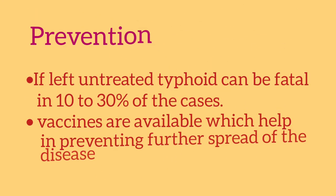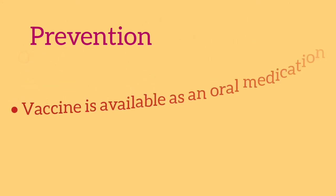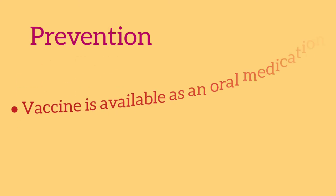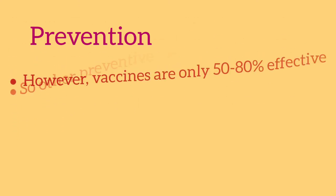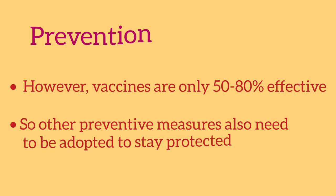There are two vaccines for preventing the disease. Vaccines are available as oral medication and injection. The oral medication can be taken by children and adults over 6 years of age, and the injection over 2 years of age. Vaccines may provide some protection against typhoid fever; however, they don't last forever, and you need to get additional doses to stay protected. Though they greatly reduce the risk of infection, it is not guaranteed.